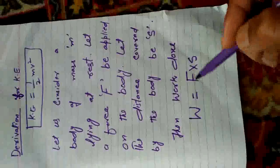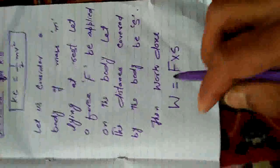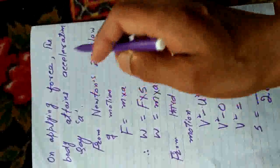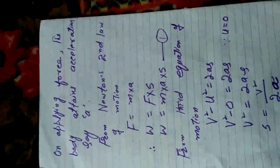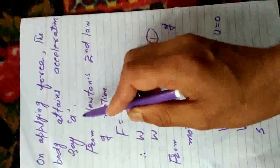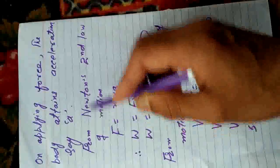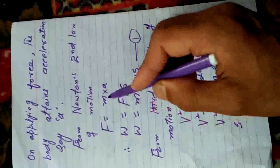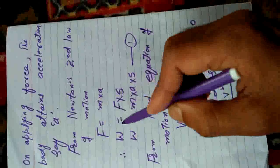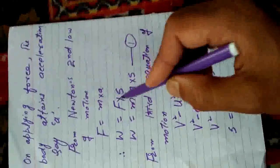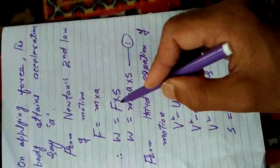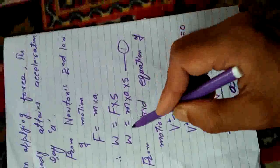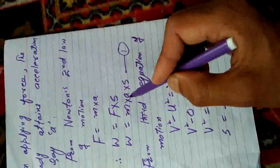Then work done W is equal to F into s. Applying force, the body attains acceleration. We know Newton's second law, so from Newton's second law of motion: F = m × a, that means mass into acceleration. So W = F × s, and substituting F, we get W = m × a × s. We will call this equation one.